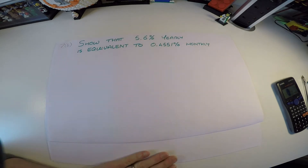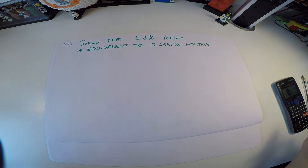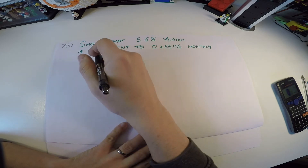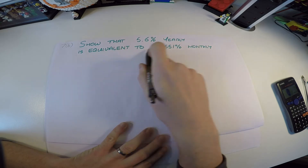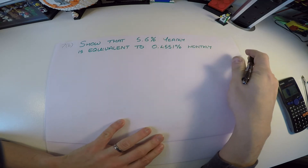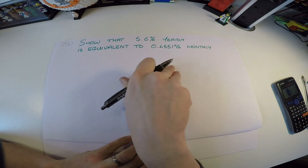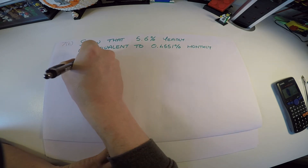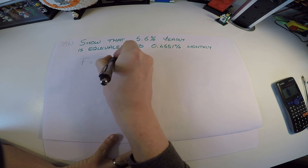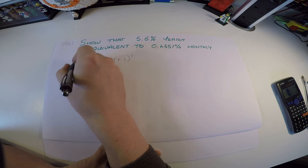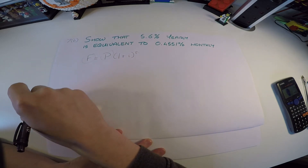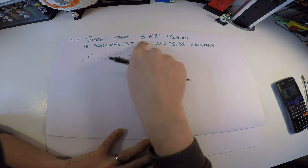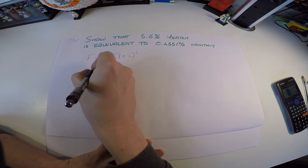In part 7B, a financial advisor says if Eva paid monthly rather than yearly she'd save money — she'd pay less interest. First we need to verify that 5.6% yearly is equivalent to 0.4551% monthly. I've done a separate video on this but I'll do it here too. Using the compound interest formula, I'll look for a one-year equivalent — finding an F that's 5.6% bigger than some P.